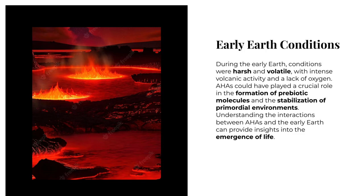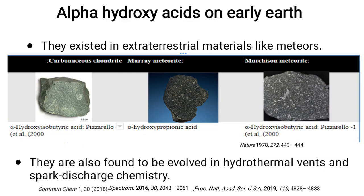Early Earth conditions were harsh and volatile due to volcanic activity and lack of oxygen, but alpha hydroxy acid could have played a crucial role in the formation of prebiotic molecules and stabilization of primordial environments. Understanding the interaction between alpha hydroxy acid and the early Earth environment can provide insights into the emergence of life. There is evidence from various scientific groups that alpha hydroxy acids are found in samples of meteors.